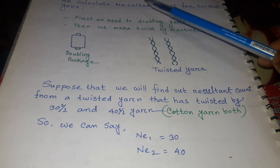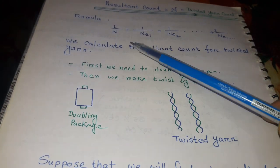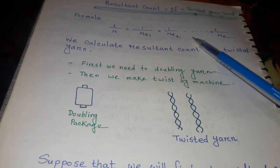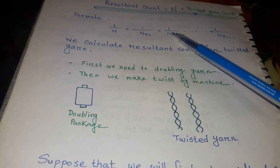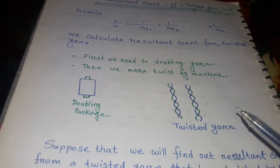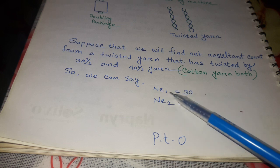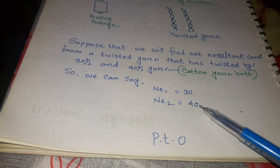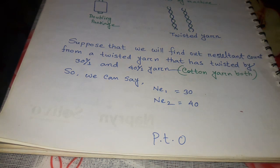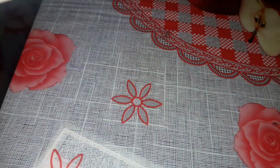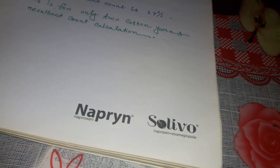From the formula, Ne1 and Ne2 are the two values. Ne1 = 30 single, Ne2 = 40 single. Now we apply these values.